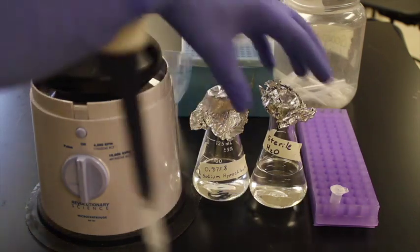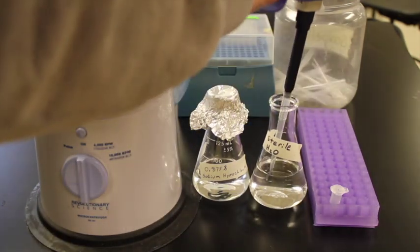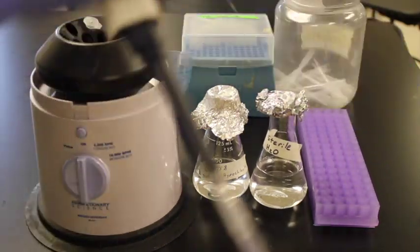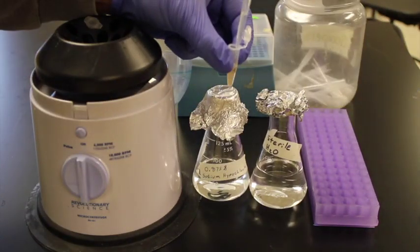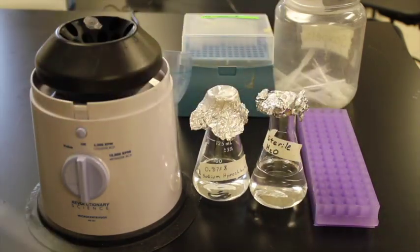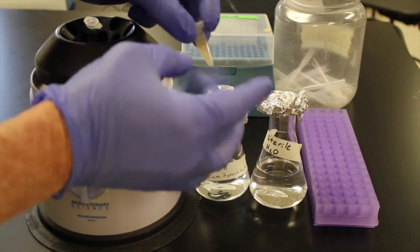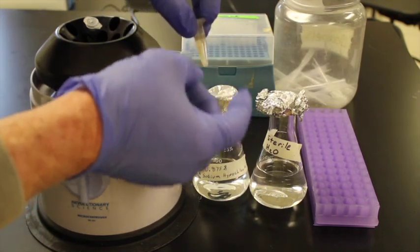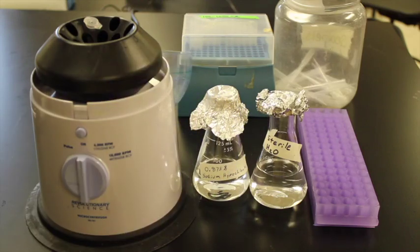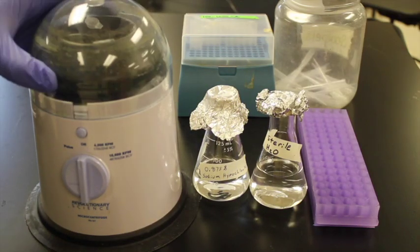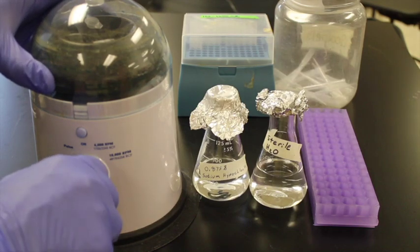Then I will change my tip again. Get some sterile water. Place the sterile water in the microcentrifuge tube. And we'll kind of mix it around a little bit to allow the water to get rid of that. I'll throw it into the centrifuge. We'll centrifuge it again.